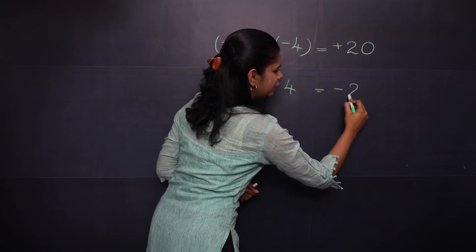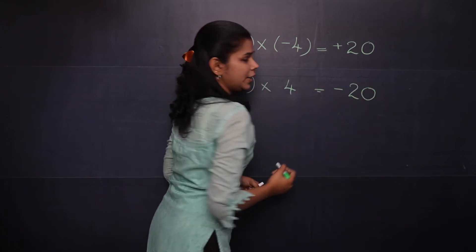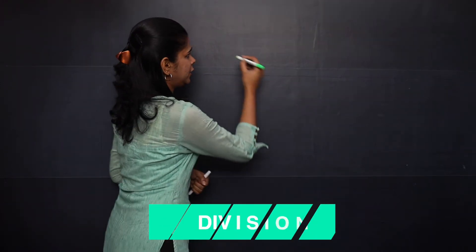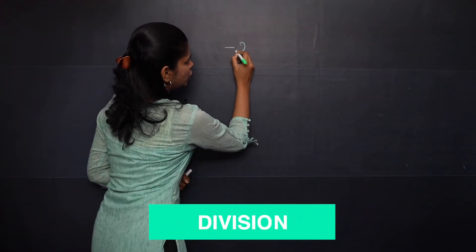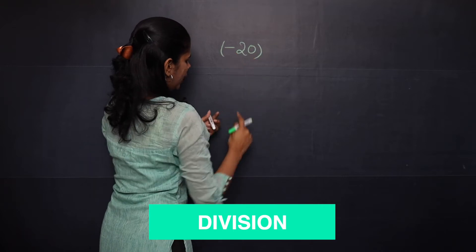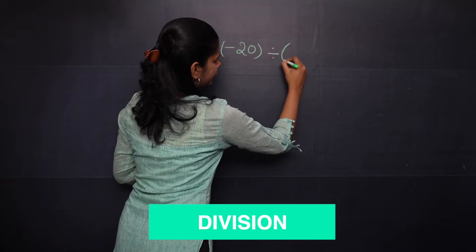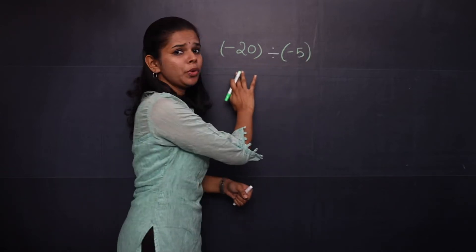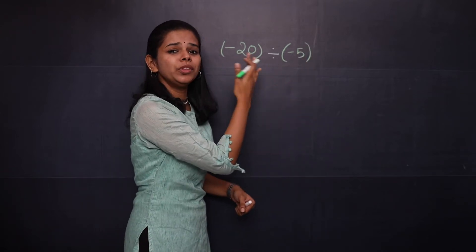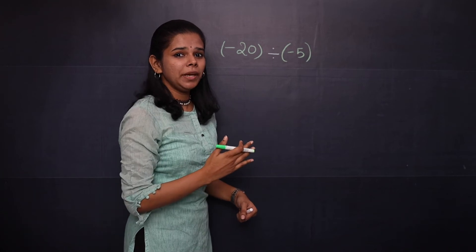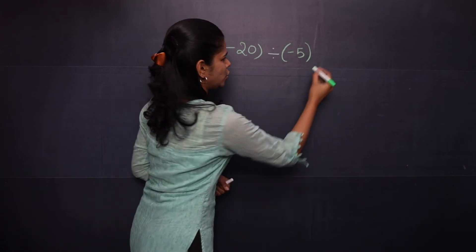Now let's do some divisions. When you divide two integers like negative 20 divided by negative 5, here you have same sign for both the integers, so your answer will be positive. This is equal to positive 4.